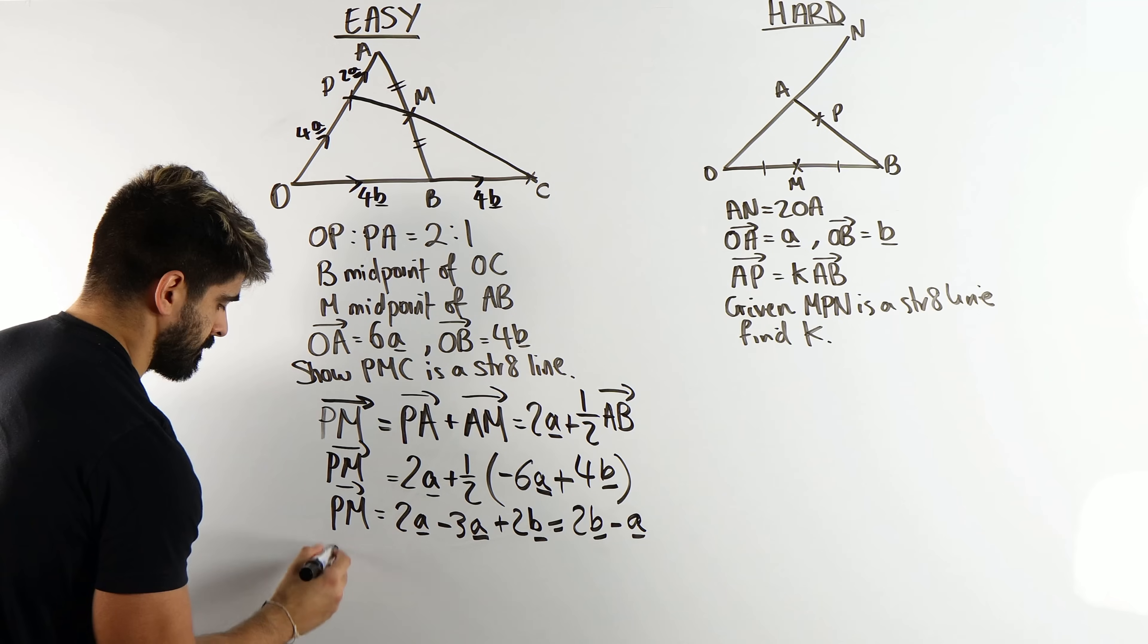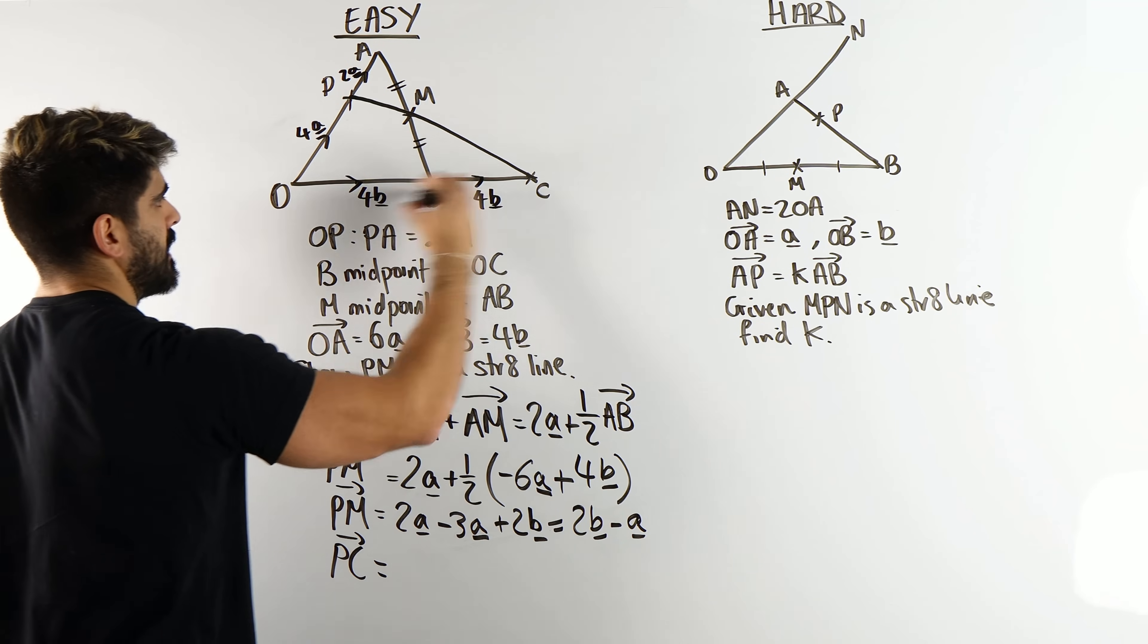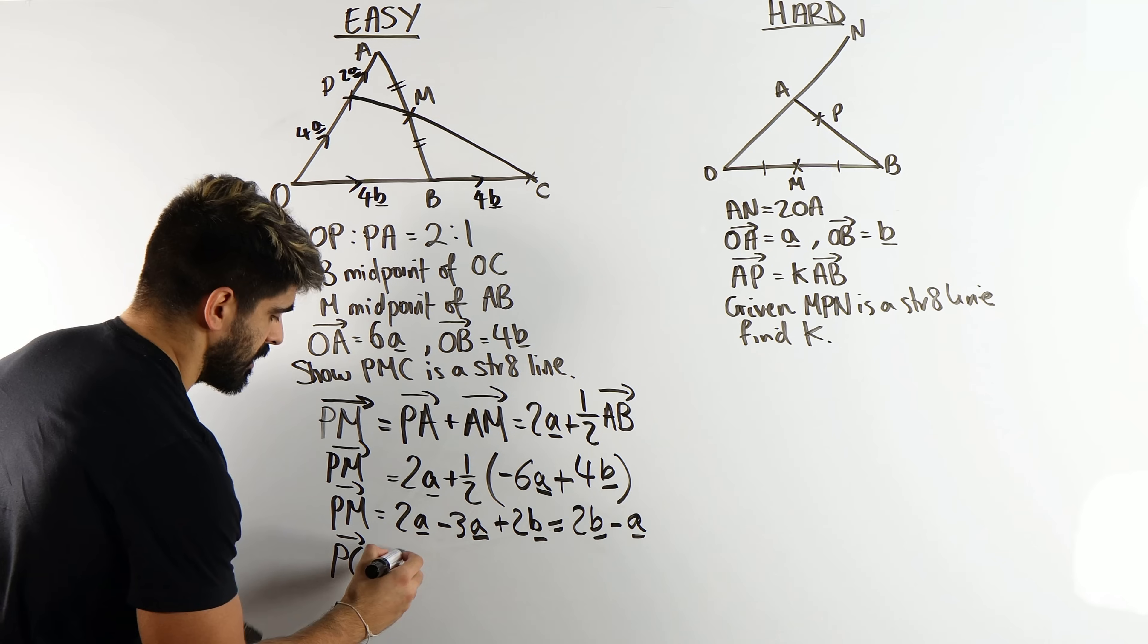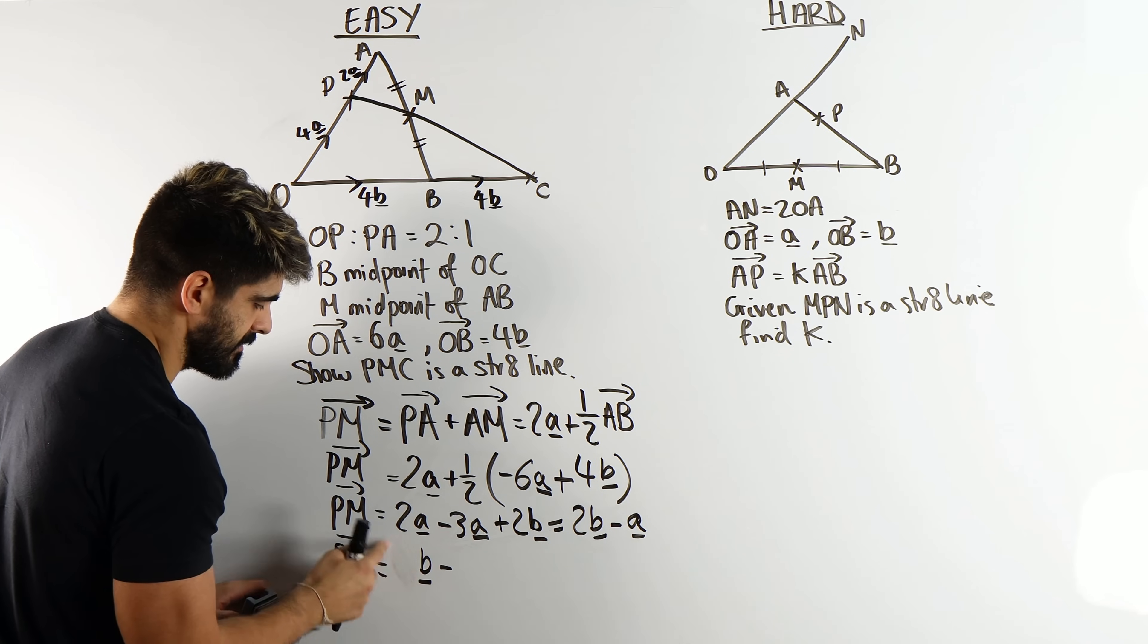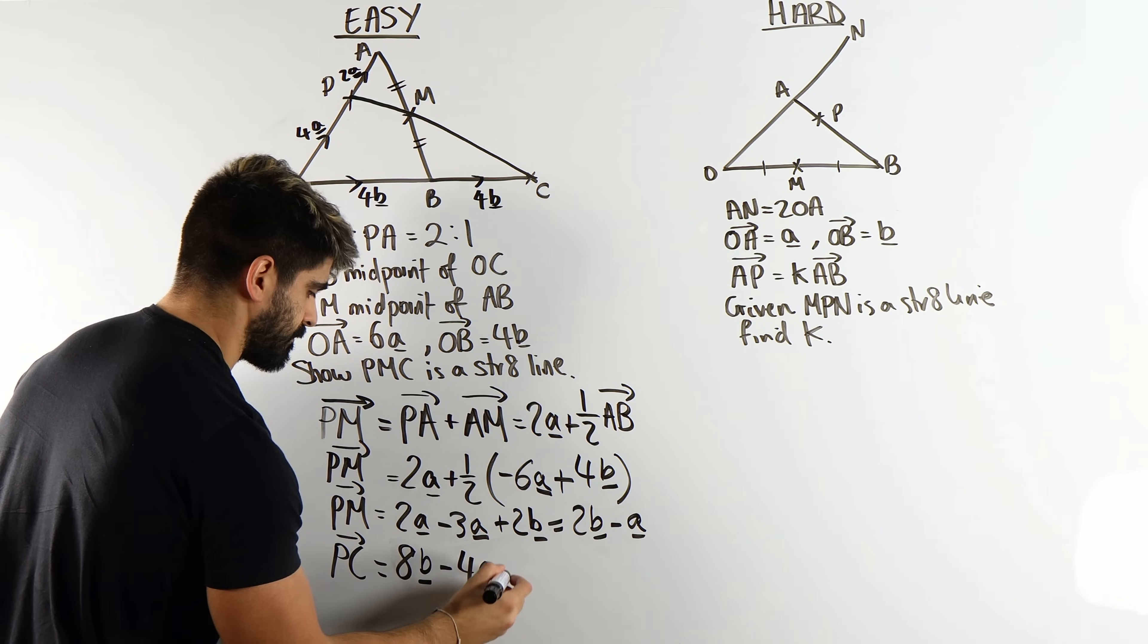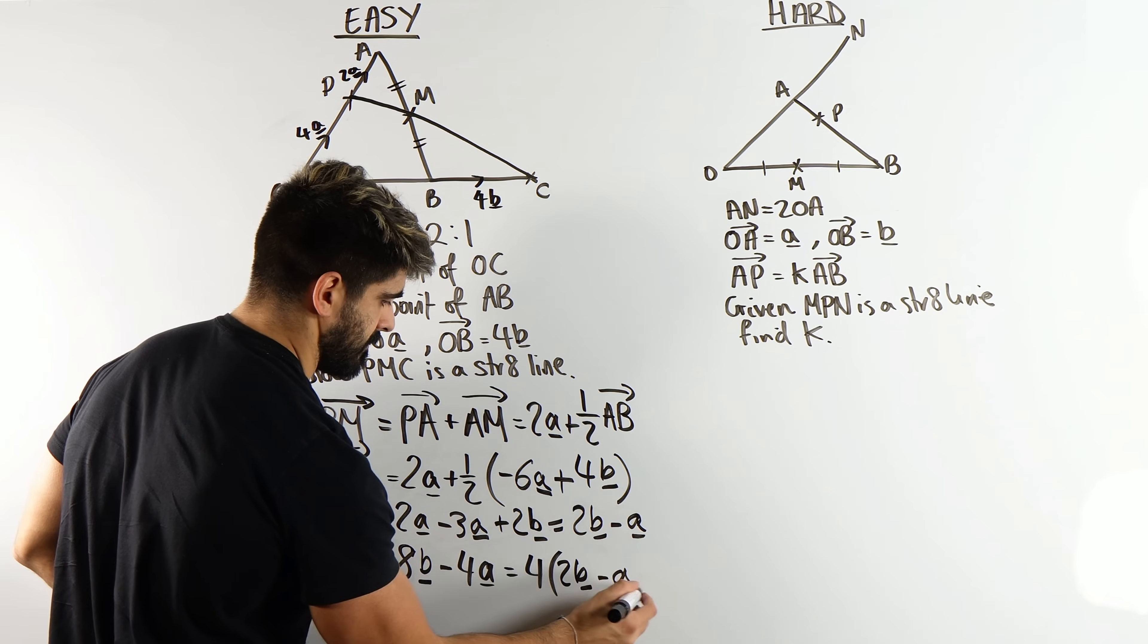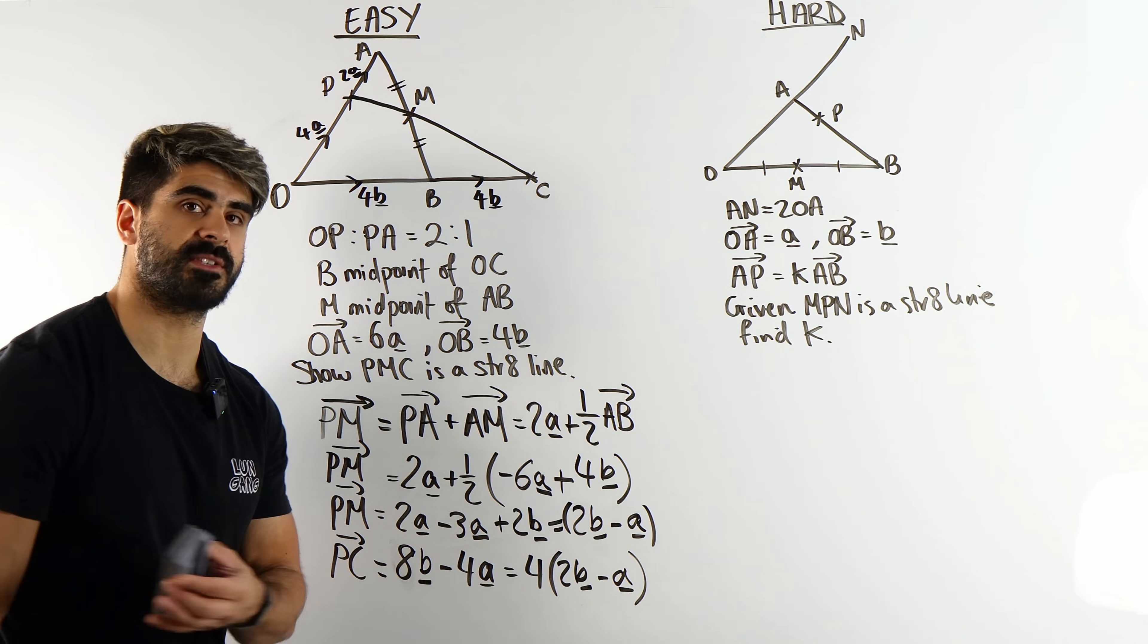Now let's do P to C. P to C, we're going back, so negative 4A, and then plus 8B. So we're going 8B minus 4A. Now this and this are parallel, but there's a better way of showing it. We can factorize out the 4, and what do you get? You get 2B minus A. What do you notice? They are both multiples of the same vector, and that means they are parallel.